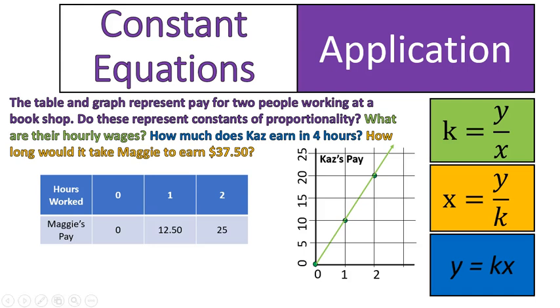Are you back? Okay. Let's look. First off, are these a constant of proportionality? A constant of proportionality with a graph means that it goes through the origin and it's a straight line. So we know Kaz's pay is a constant of proportionality. The other table over here, you would have to do 12.50 divided by 1 which would give you 12.50 and then 25 divided by 2 which also gives you 12.50. So you would need to see if they are proportional to each other or if you get the same number when you divide them. And in this case, yes you do so we are good to go.